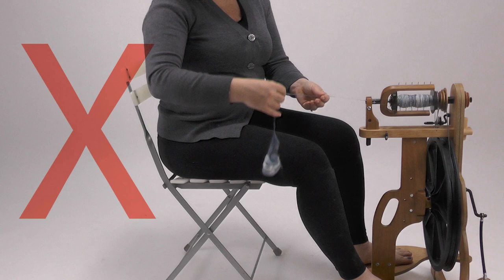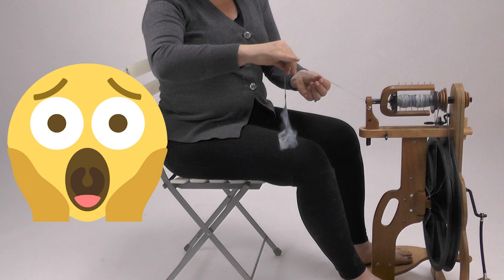Now the twist travels as far as it can up into the fiber supply, and now it can't be drafted. It's already twisted.